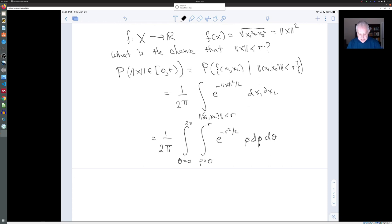And this is actually a doable integral. And in fact, if we do the θ integral first, we're just integrating a constant from 0 to 2π dθ, which is 2π, and that cancels the 2π. So that just leaves us with the integral from 0 to R of e to the minus ρ² over 2, ρ dρ.